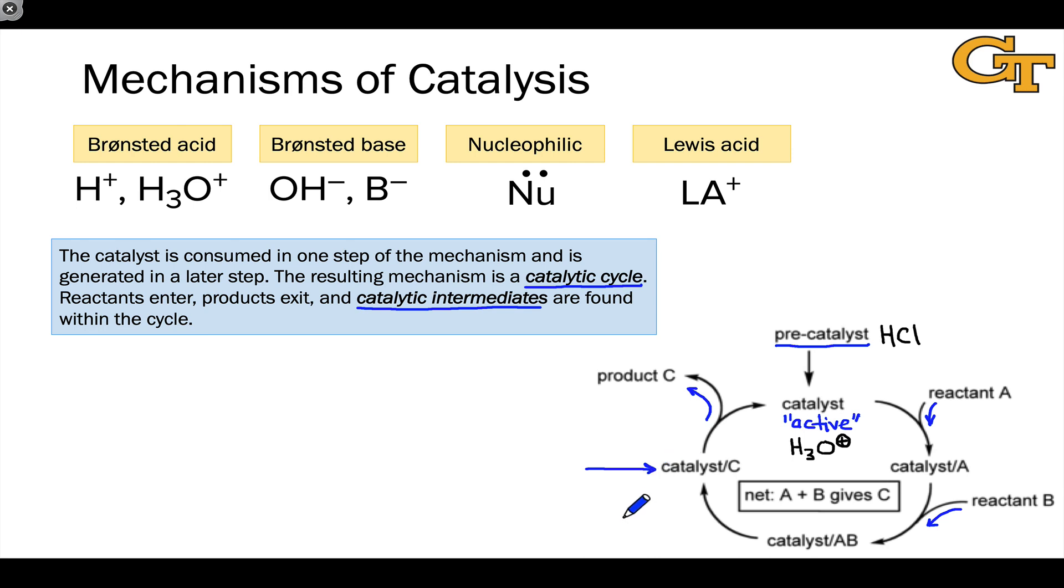So for example, if it was possible for us to generate the catalyst intermediate with C through the use of a different precatalyst in the presence of A and B, we could get to this same catalytic cycle starting from a different precatalyst. So in that sense, each of these catalytic intermediates can be thought of as the catalyst, quote-unquote.